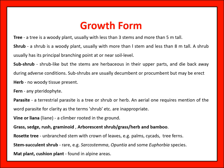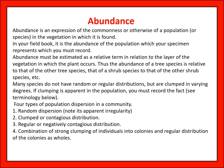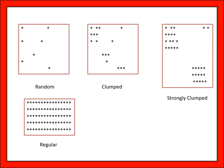Growth forms include trees, shrub, herb, fern, parasites, liana, and grass. Regarding abundance, we should know the abundance before collection: random, clumped, strongly clumped, or regular distribution.